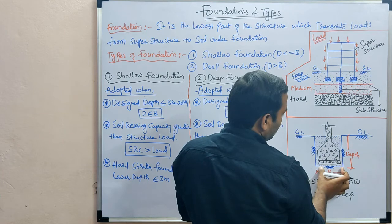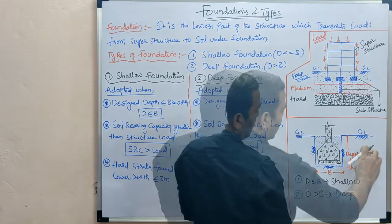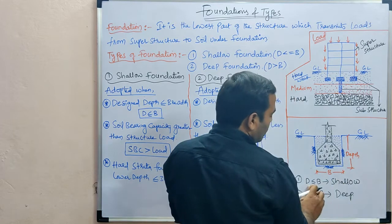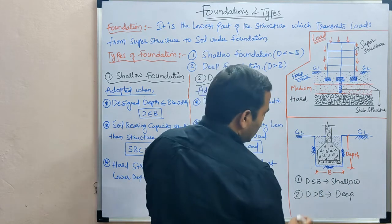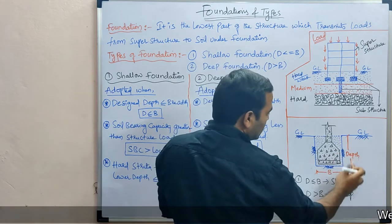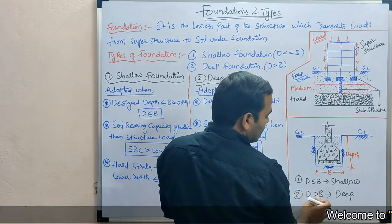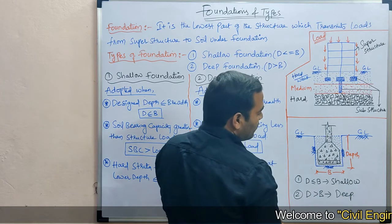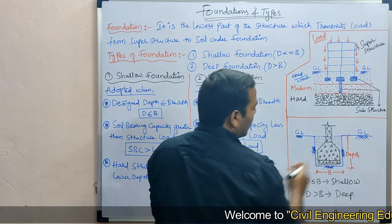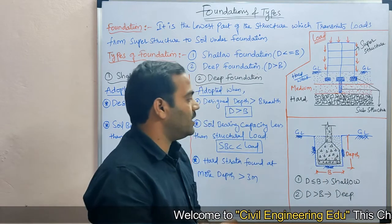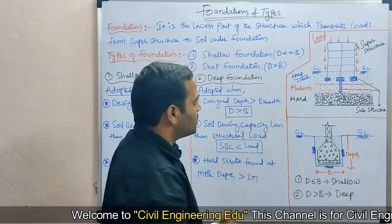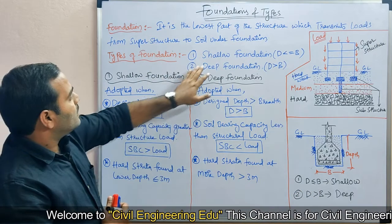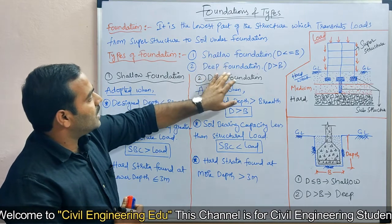The breadth of foundation is the breadth required for the footing. If the depth is less than or equal to the breadth, then we call it a shallow foundation. If the depth is greater than the breadth, then we call it a deep foundation. Based on this dimension and the design, foundations are divided into two types: shallow foundation and deep foundation.